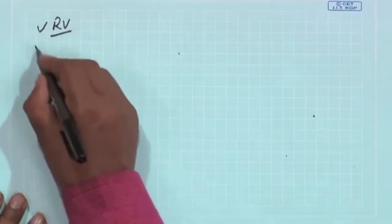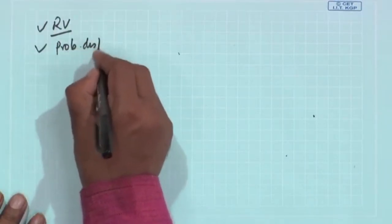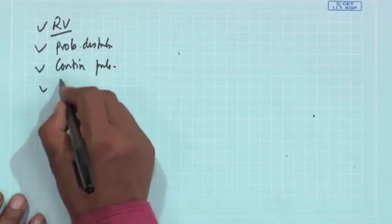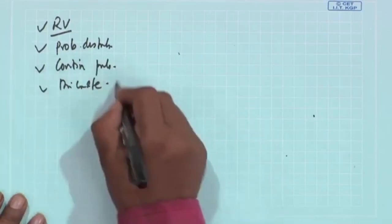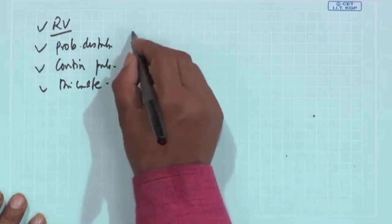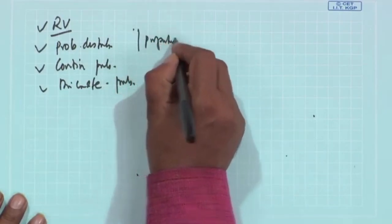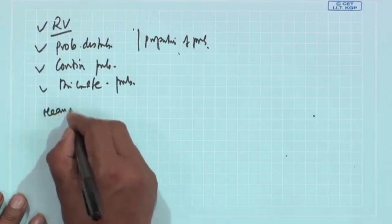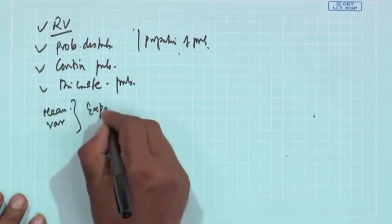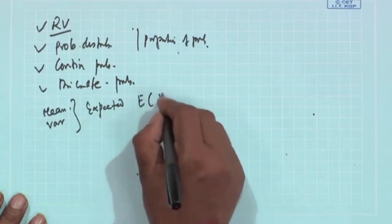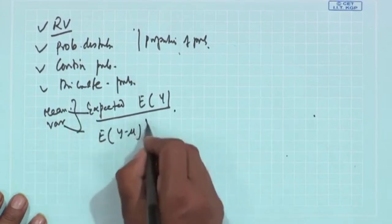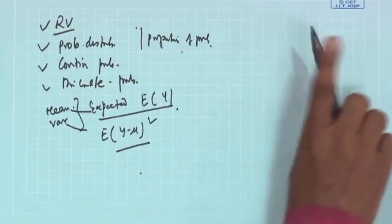Now you know random variables, continuous and discrete probability distributions, and that mean and variance are expected values — E(y) for mean and E(y − mu)² for variance.